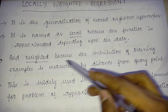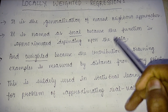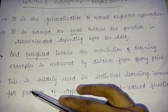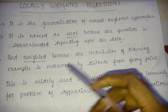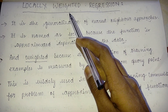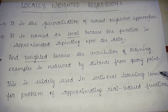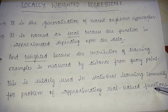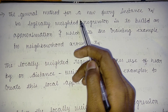From the training examples to the query point, there is some distance that is being measured, and that is why we use the term 'weighted.' This is widely used in the statistical learning community for the problem of approximating real-valued functions.